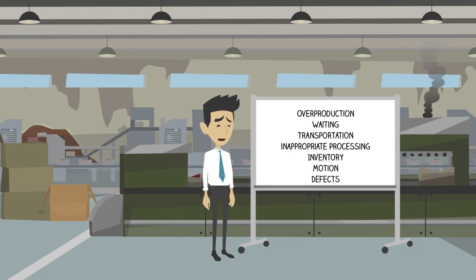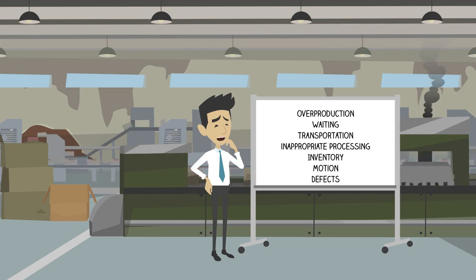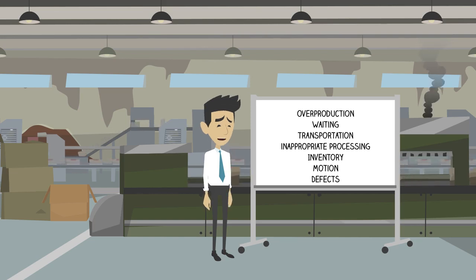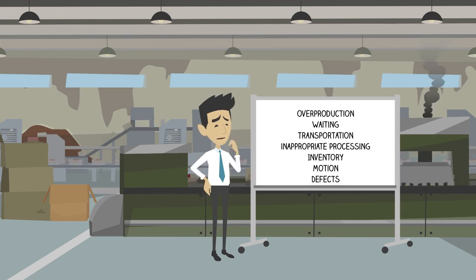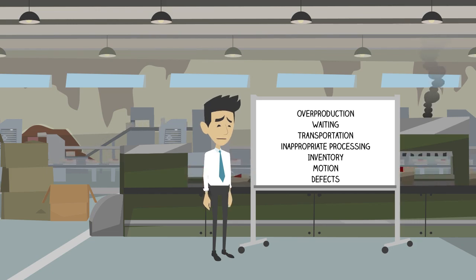Ono often would draw a circle on the factory floor and have newly hired engineers stand in the circle and write down as many wastes as they can observe. The wastes Ono identified were overproduction, waiting, transporting, inappropriate processing, excess inventory or storage, unnecessary or excess motion, and defects. Let's examine each of these wastes in some more detail.